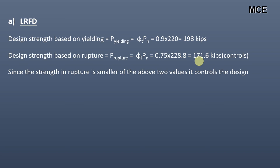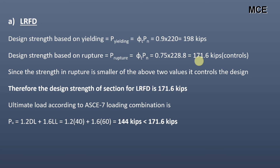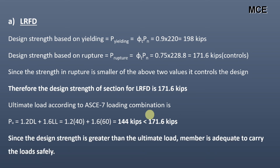Since the strength in rupture is the smaller of the two values, it controls the design. Therefore, the LRFD design strength of the section is 171.6 kips. The factored ultimate load per ASCE 7 load combination is 1.2 times dead load plus 1.6 times live load, giving 144 kips. Since the design strength of 171.6 kips is greater than the ultimate load of 144 kips, the member is adequate to carry the load safely according to LRFD.